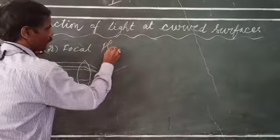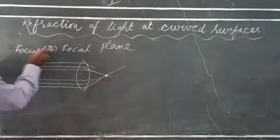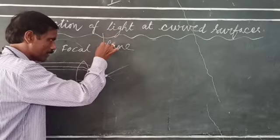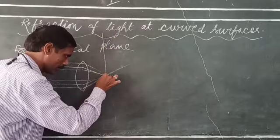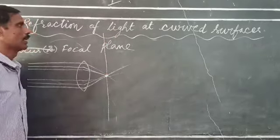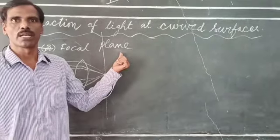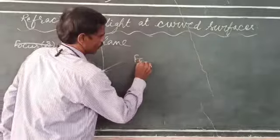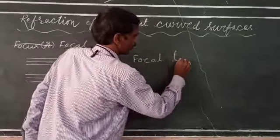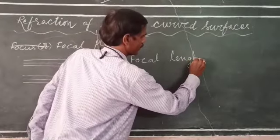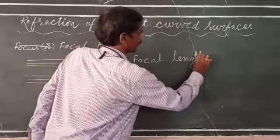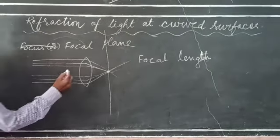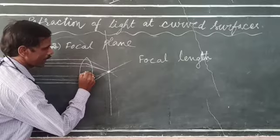Next is focal plane. It is a vertical surface which passes through the focus, and is defined as the focal plane. Focal length is defined as the distance between the pole and the focus.